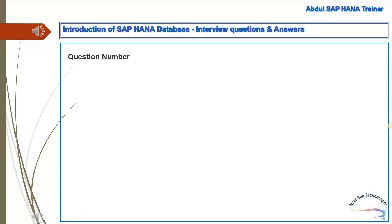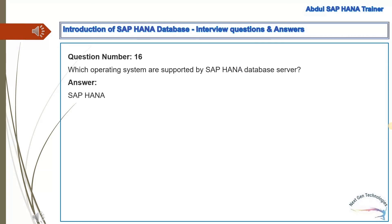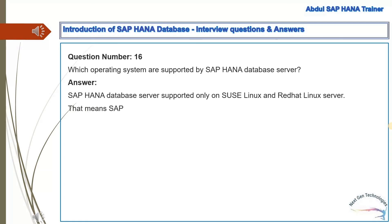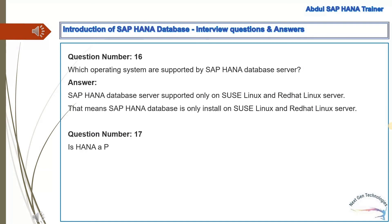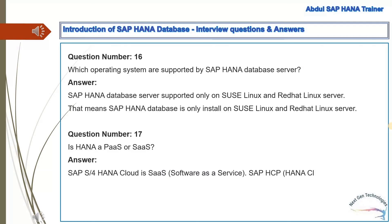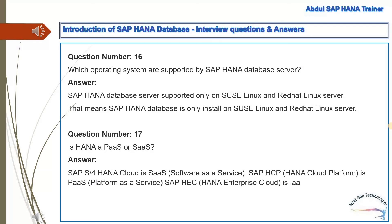Question 16: Which operating systems are supported by the SAP HANA database server? Answer: SAP HANA database server is supported only on SUSE Linux and Red Hat Linux. Question 17: Is HANA a platform as a service or software as a service? Answer: SAP S/4HANA Cloud is software as a service. SAP HANA Cloud Platform is platform as a service. SAP HANA Enterprise Cloud is infrastructure as a service. SAP HANA itself is a database.